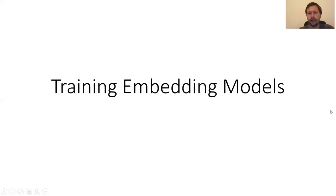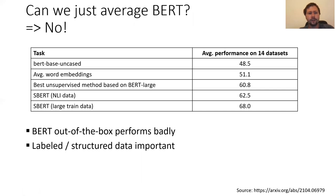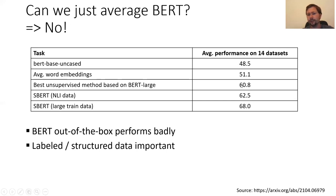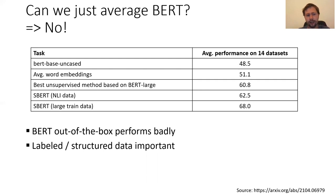Now I'll talk about how to train embedding models in detail. First question: can we just average BERT? The answer is no. If we take BERT-base uncased and just average, it performs worse than averaging standard word embeddings like GloVe. However, the best unsupervised method on BERT-large achieves around 60 average across benchmarks. As soon as you add training data — for example, NLI data — performance improves, and with large training data, performance improves quite significantly. Labeled and structured data is quite important.